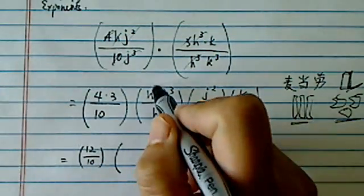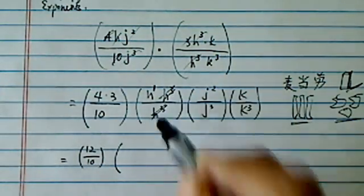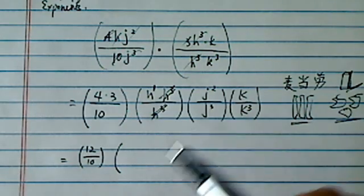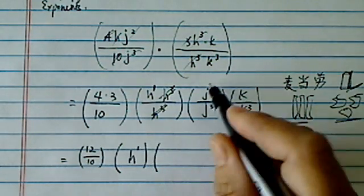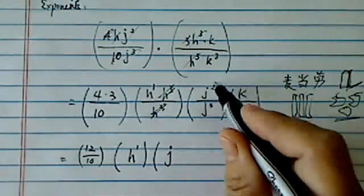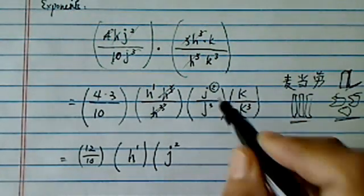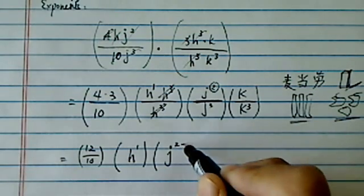Now, what we're going to do is, first of all, if they are the same, you're going to cancel them. So H to the one is all that's left. When you have a J, if it's on the top, it's positive. If it's dividing, you're going to subtract.